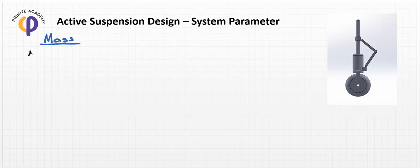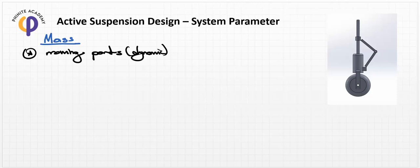Mass is directly related to the moving parts in dynamics, which means that we should not include the static or non-moving parts in our dynamic equation. In order to create this kind of dynamical system, we should determine the moving parts in this suspension design system or the oleo structure, and then create free body diagrams to get a full picture.